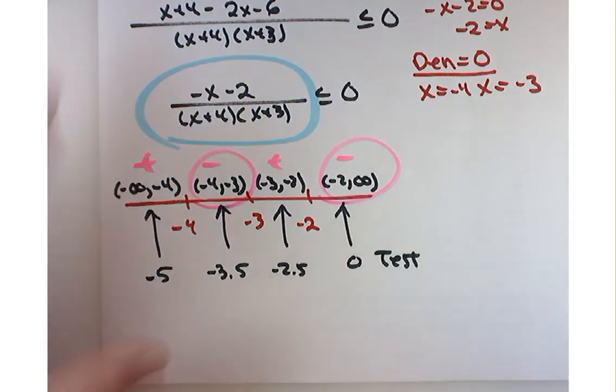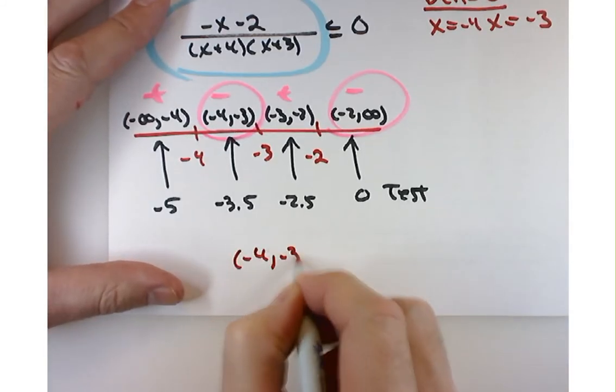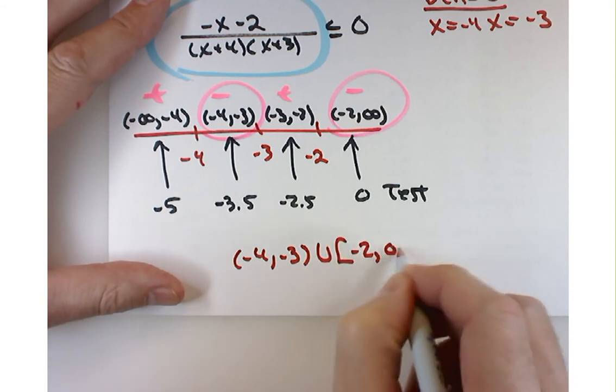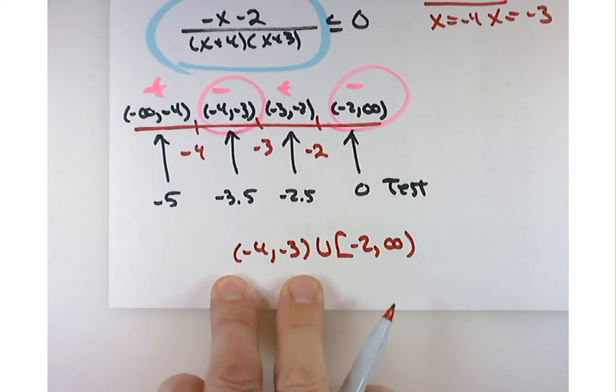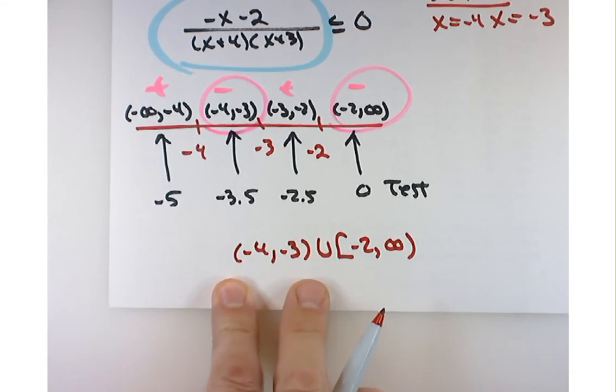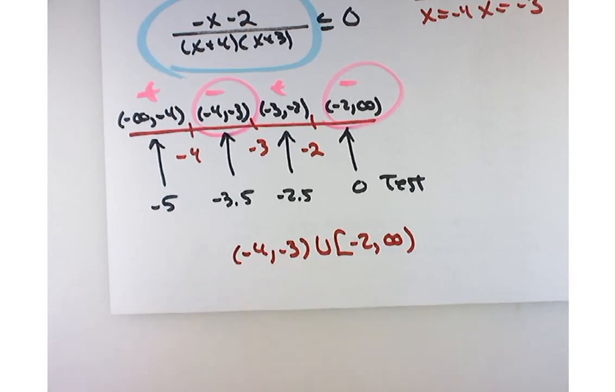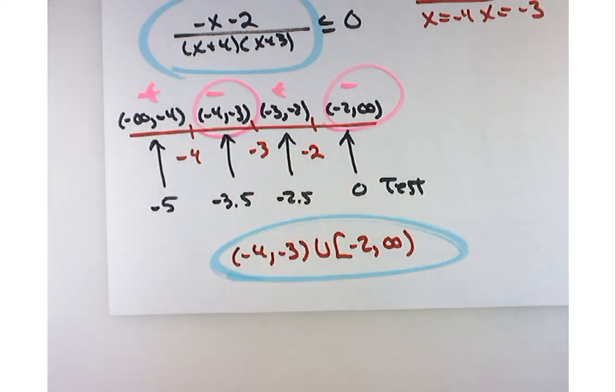So overall, your answer should look like negative 4 to negative 3 union, negative 2 with a bracket, to infinity with a parenthesis. There's two points right here for getting the parenthesis correct on both of these endpoints. And then, I guess another one there, too. So you definitely want to pay attention to what's happening there. Remember, you can test your endpoints there with no problem.